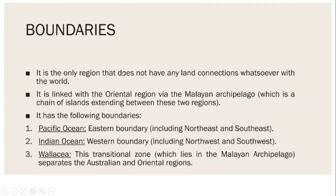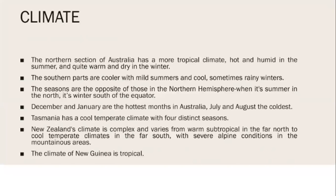There are different boundaries within the region. On the eastern side of the Pacific Ocean, the boundary runs northeast to southeast. The western side borders the Indian Ocean, and the eastern side of the Indian Ocean forms a transitional zone that separates the Australian region from the Oriental region.